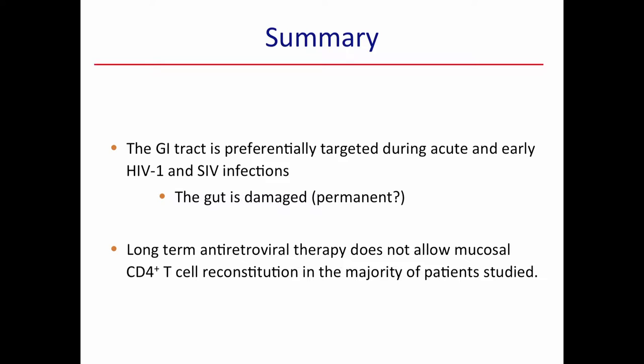Just to summarize: the GI tract is preferentially targeted during acute and early HIV and SIV infection. The gut is damaged, and it seems that that may be permanent — at least we don't yet know how to repair it in its entirety. Long-term antiretroviral therapy does not allow mucosal CD4 T cell reconstitution in the majority of patients that have been studied.